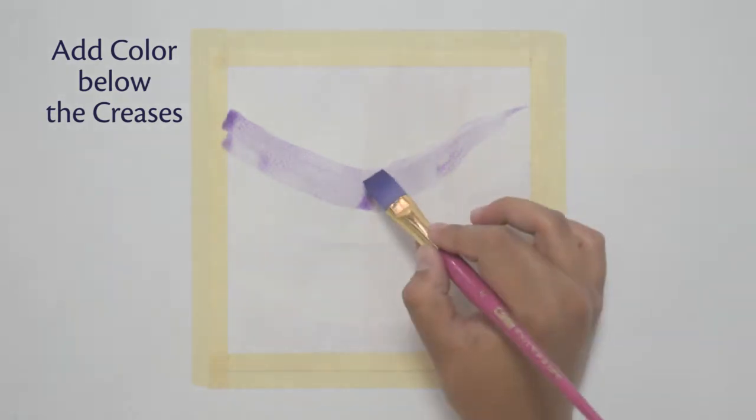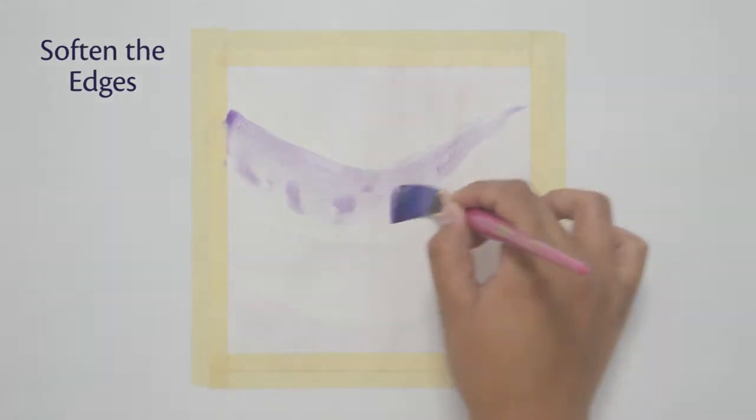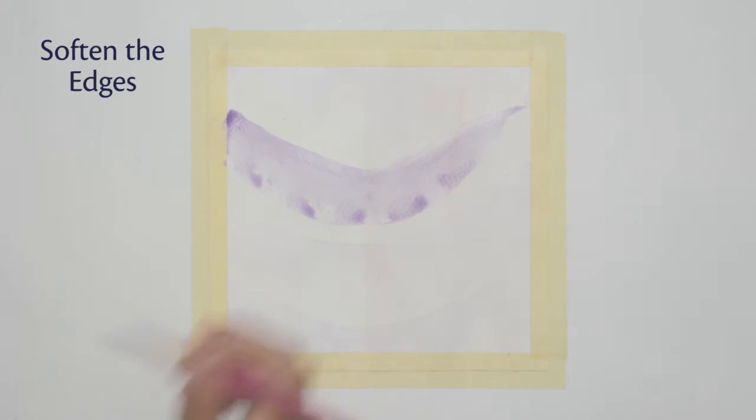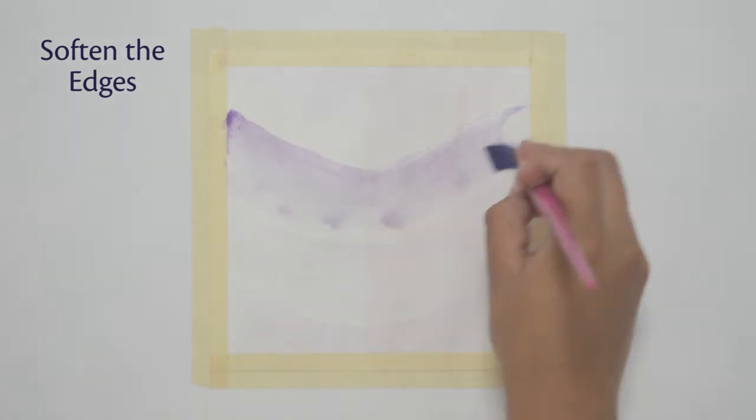And add the second layer of color where the fabric looks a bit darker, or more intense. I start adding the color on the folds and creases. You can add water on the edges to soften them and to make the color look graded.